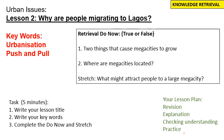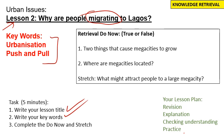What I would like you to do is three things. First, write your lesson title, which is 'Why are people migrating to Lagos?' This is the second lesson in this urban series. We'll find out what Lagos is and look at migration, movement to Lagos. Second, write your keywords — we have two today: urbanisation and push and pull. We will use those words as we move through the lesson.